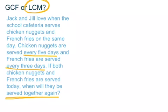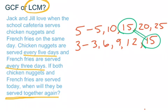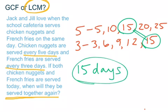I'm going to list out the multiples for the number five and the number three and find the smallest number they have in common. Following the rule of listing about three to seven multiples for each number, when I compare the lists I see that 15 appears in both. Because 15 is in both lists, my answer is 15 days — both chicken nuggets and french fries will be served together again after 15 days.